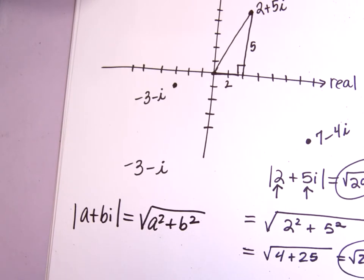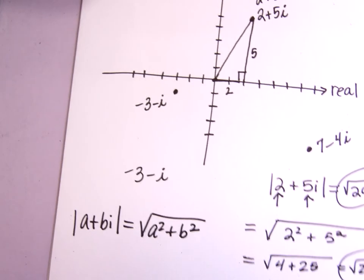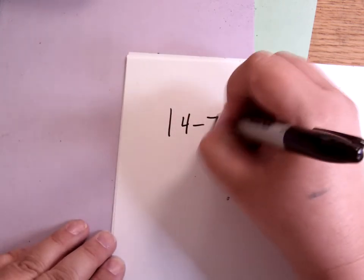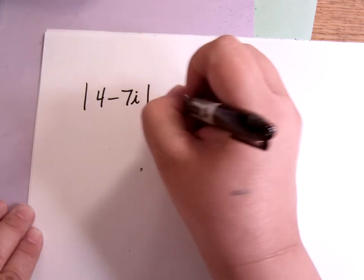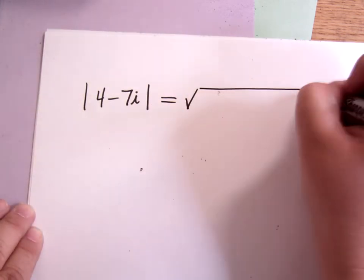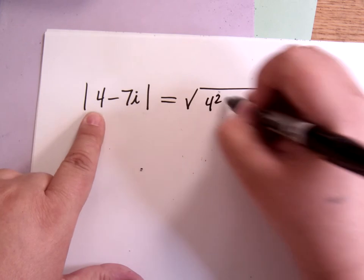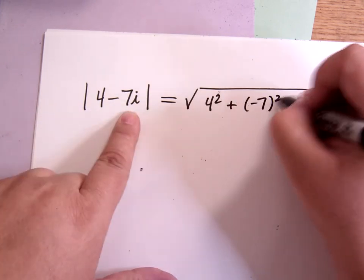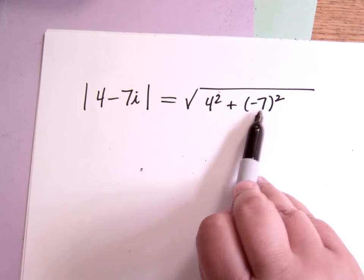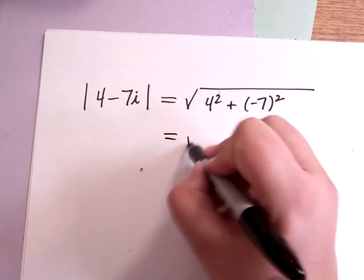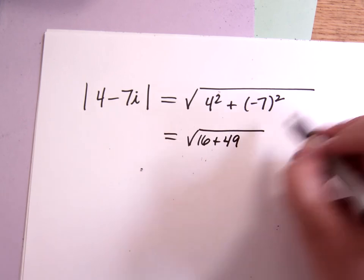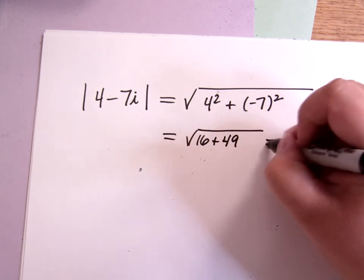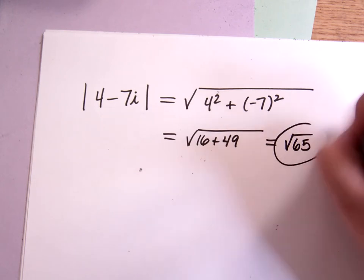Okay, so for instance, let's look at absolute value of 4 minus 7i. Well, that would be the square root of 4 squared plus negative 7 squared. That's my a squared. Here's my b squared. That's going to be 16 plus 49. And that's going to be 65. So the square root of 65, I don't think that simplifies, and that would be my answer.